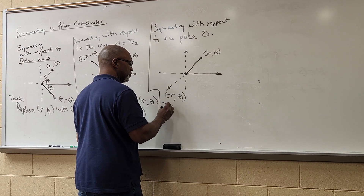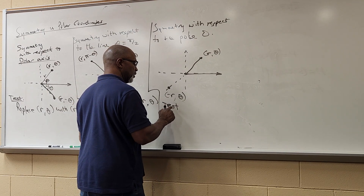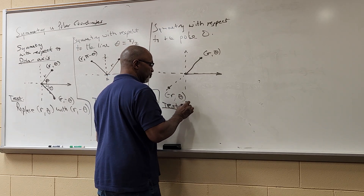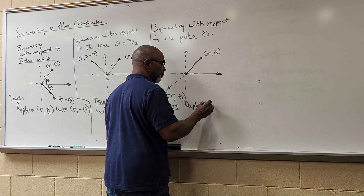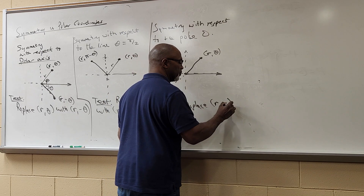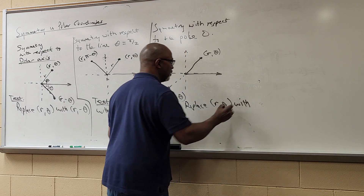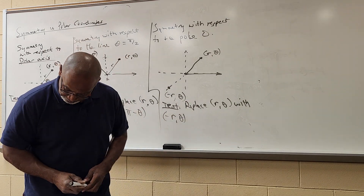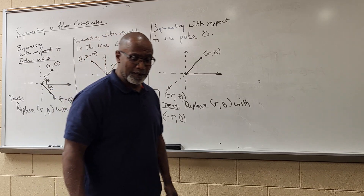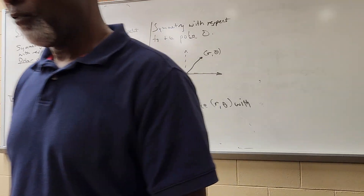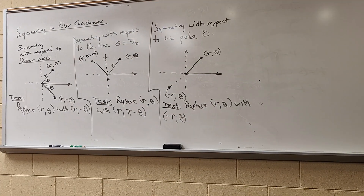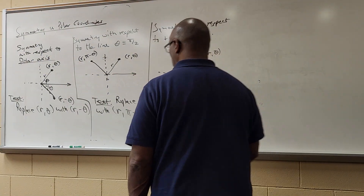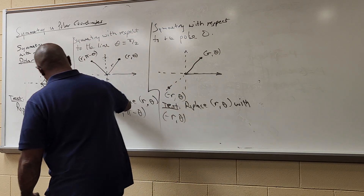The test for pole symmetry: replace (r, θ) with (-r, θ). If we get the exact same function back that we had when we began, then our function is symmetric with respect to the pole. So those are the three types of symmetry for polar equations.